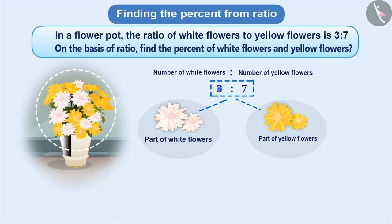Here, out of the total flowers, 3 parts of white flowers and 7 parts of yellow flowers are there.